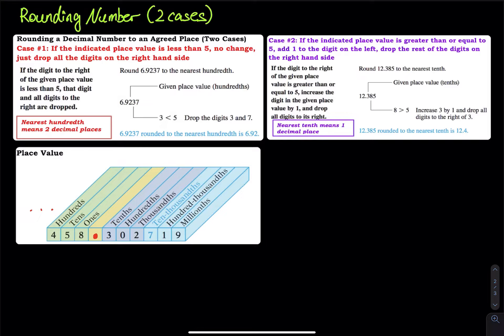Case one: if the indicated place value digit is less than five, we don't change anything — just drop all the digits on the right hand side. We are trying to round 6.99237 to the nearest hundredth. The hundredth is the second digit on the right hand side of the decimal point. To decide whether to change or not, you look at the value right next to it on the right.